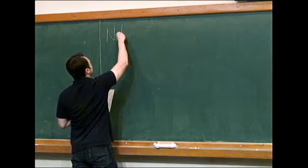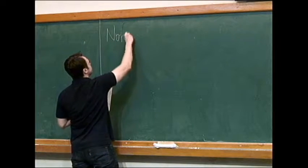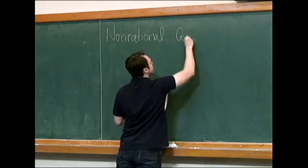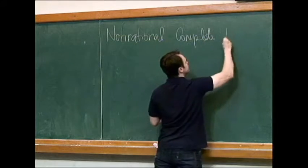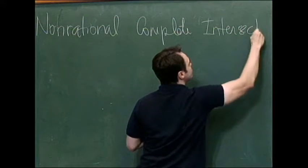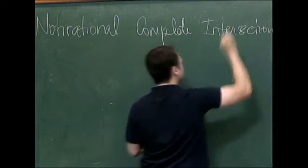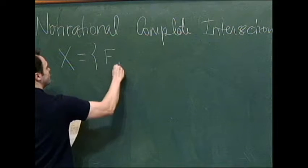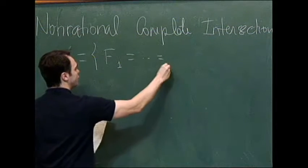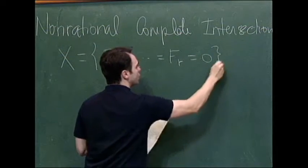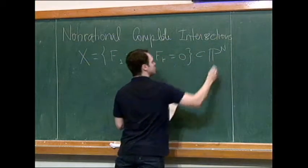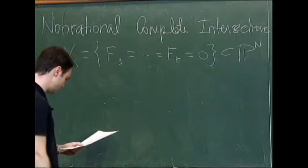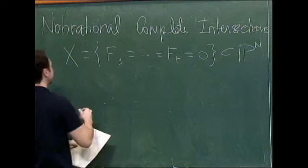As Carolina said, the talk is about non-rational complete intersections. So what is a complete intersection? It's a subscheme, or rather a subvariety of projective space defined by r equations and having codimension r equal to the number of equations.